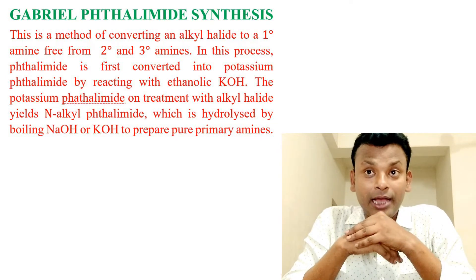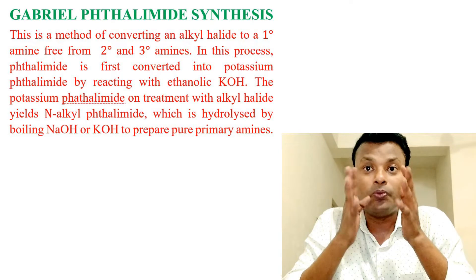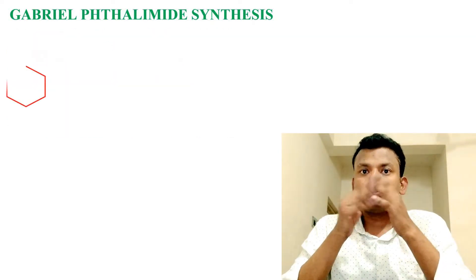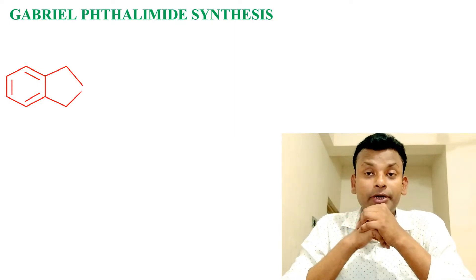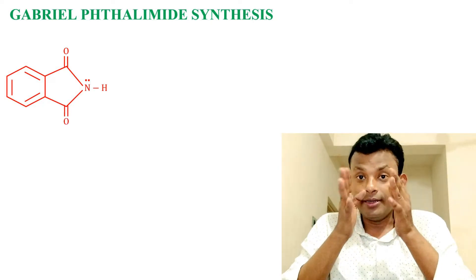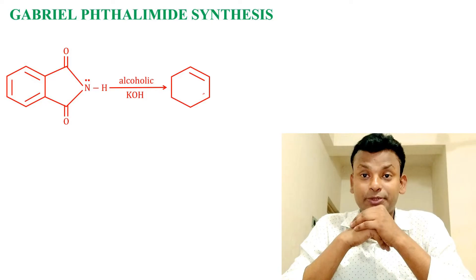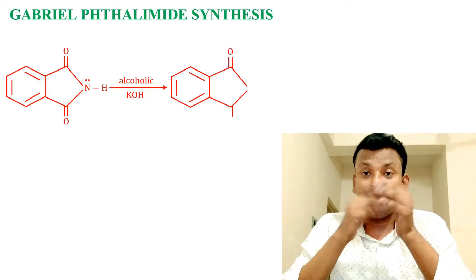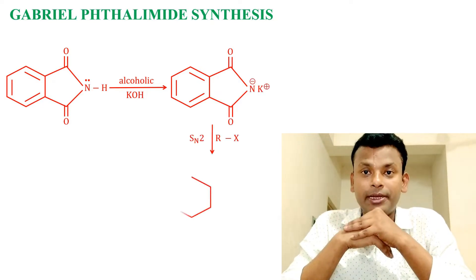This is then hydrolyzed by boiling NaOH or KOH to prepare pure primary amines. Reaction: first, phthalimide reacts with alcoholic KOH to give potassium phthalimide. In the next step, it reacts with alkyl halide — that is a substitution reaction, an SN2 reaction — to form N-alkyl phthalimide. Hydrolysis then gives phthalic acid and pure primary amine.